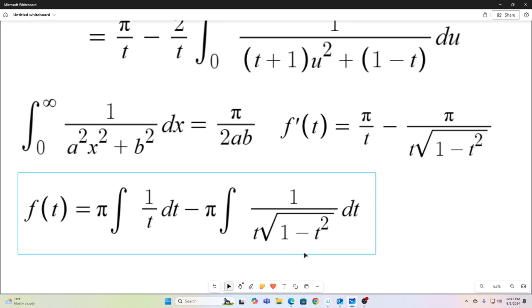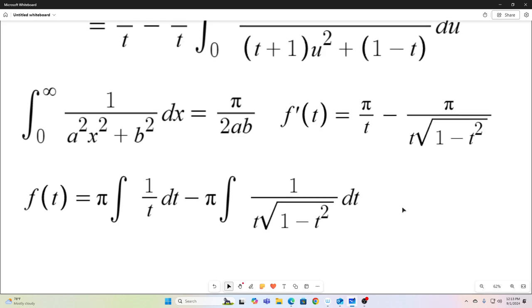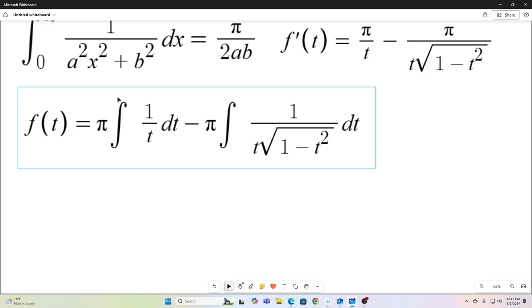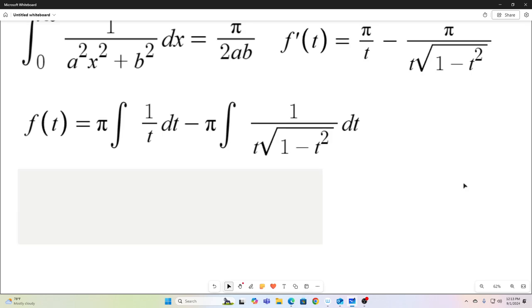All right, so now we integrate f prime of t to get back to f of t. So the first one, the first integral right there, pretty easy to evaluate. The next one, it's not so bad. It's just a trig sub. You can let t equal either sine or cosine and do the integral that way. Of course, the motivation for that substitution would be to have the square root of either 1 minus sine squared or 1 minus cosine squared, and then it becomes easier to solve from there. But if you evaluate that integral and combine it with what you get when you evaluate this integral, this is what you end up with all in all. This is what it turns out to be. And again, I'm not going to show the work because these integrals are solvable using standard techniques. But this is what you get. Our f of t is equal to π times the natural log of the square root of 1 minus t squared plus 1, and then of course we have a constant of integration.